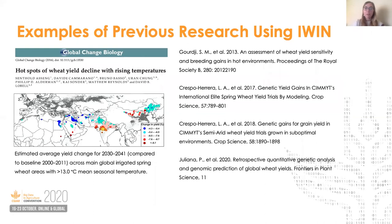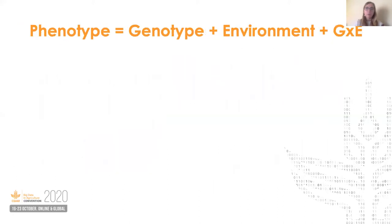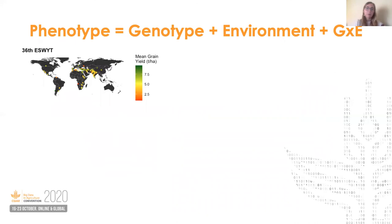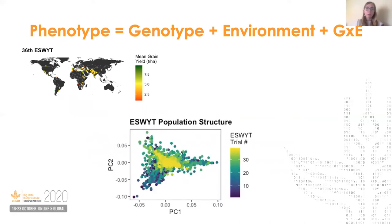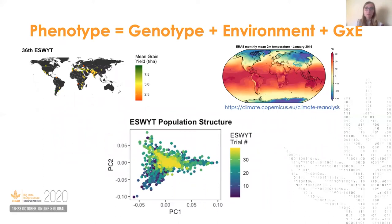Previous efforts have leveraged primarily the phenotypic records from the IWIN, aimed at understanding how wheat yields are responding to climate factors and assessing genetic gains within the breeding program. But beyond these studies, not much of the IWIN data has been explored at a really high level. CIMIT has been accumulating extensive phenotypic records, but to understand the phenotypic variation within these datasets, we also need to know something about the genotypes and the environments in which the testing occurred.